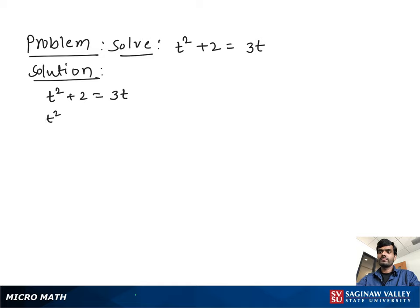So write t square minus 3t plus 2 equal to 0. Now we find the factor of this quadratic equation.